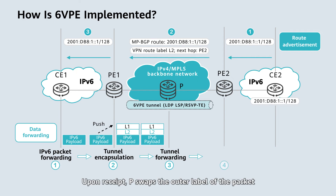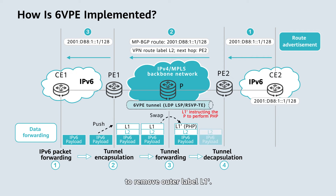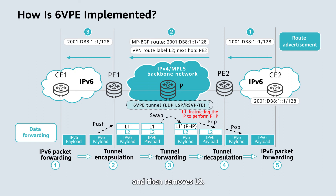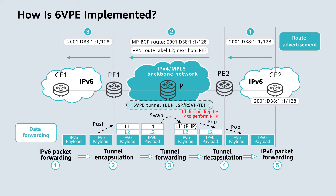Step 4: upon receipt, the penultimate hop performs penultimate hop popping, or PHP, to remove outer label L1. Step 5: after PE2 receives the packet, it determines the corresponding VPN instance based on inner label L2 and then removes L2. Next, PE2 forwards the original IPv6 packet to CE2 based on the destination address of the packet and the VRF table. IPv6 packets are forwarded between CEs and PEs, and MPLS packets are forwarded between PEs.